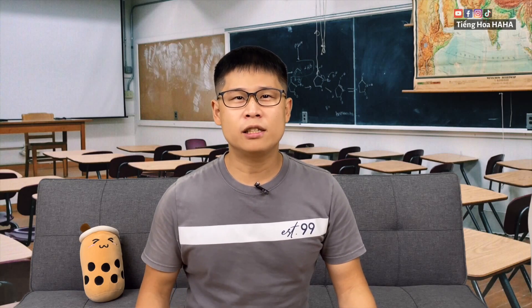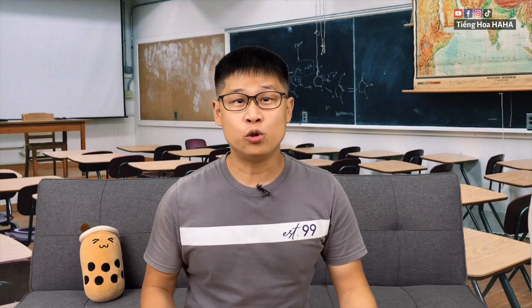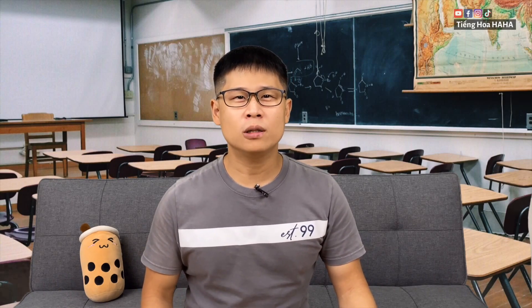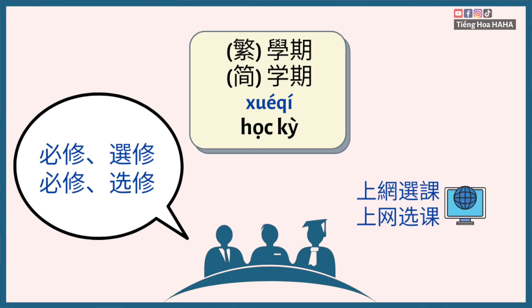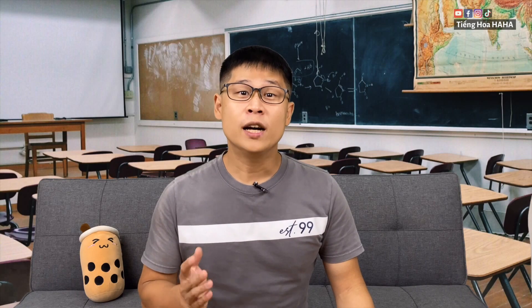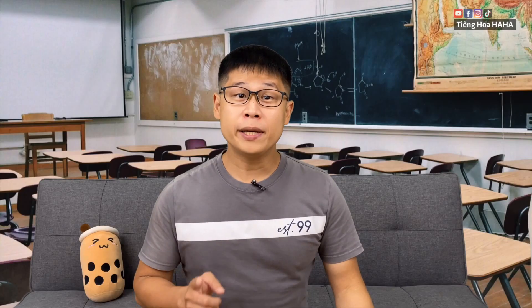台灣一般大學都是四年制，當然會根據每個學校、科系，還有你學的內容而有所不同。每年有兩個學期，每學期都有必修課和選修課。你必須上網選課，在選課的時候你一定要算自己的學分，確定能夠符合畢業學分的標準。